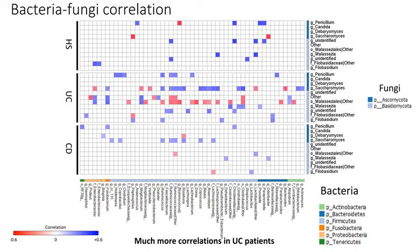We then looked at bacterial-fungal interactions by investigating correlations. We observed several positive and negative correlations between fungi and bacteria in LC subjects. This was different in IBD, with a higher number of correlations in ulcerative colitis and, conversely, weaker correlations in Crohn's disease. These results suggest the existence of disease-specific inter-kingdom crosstalk alterations.